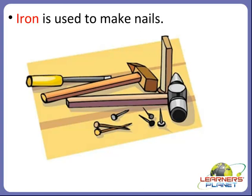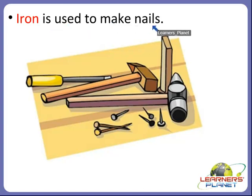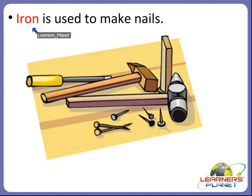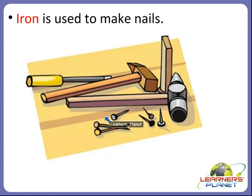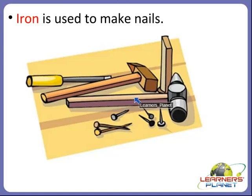The first example is iron. Iron is used to make nails. So iron is a very important type of mineral which we use to make nails. Here we can see the picture of some nails and other things which are made up of iron.